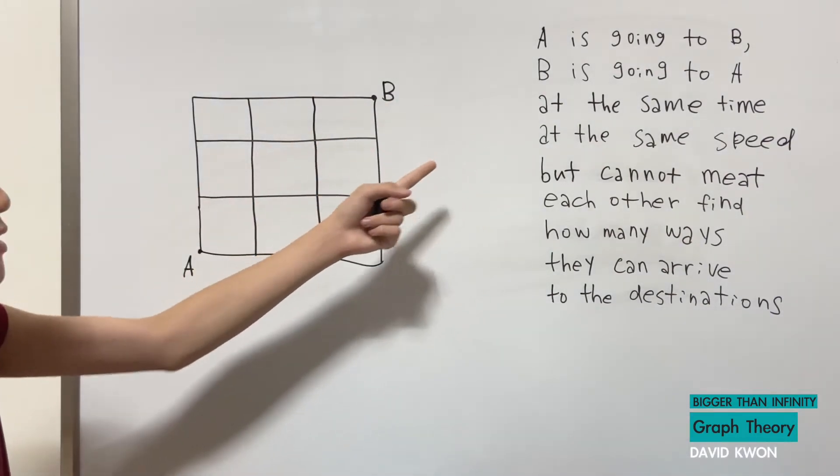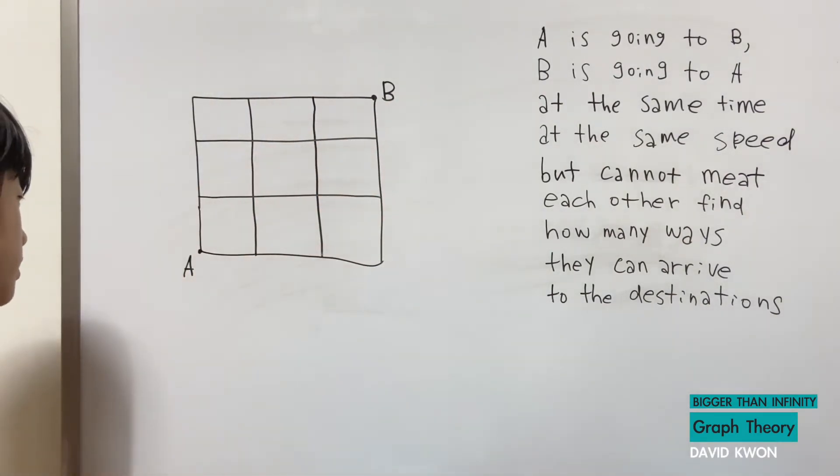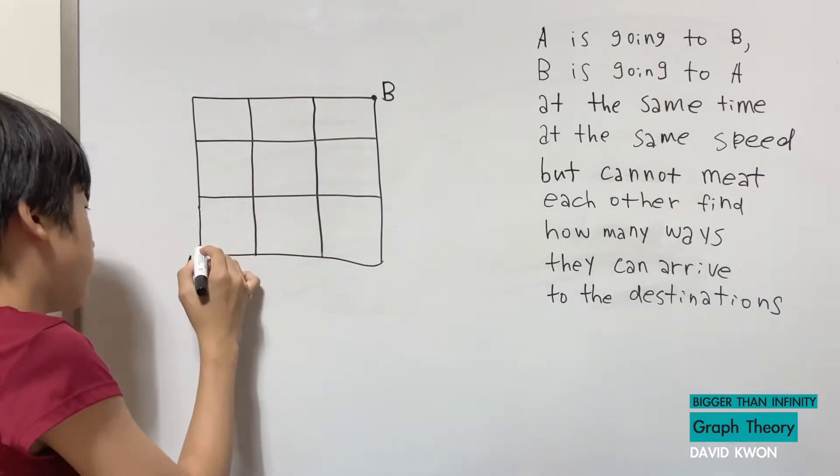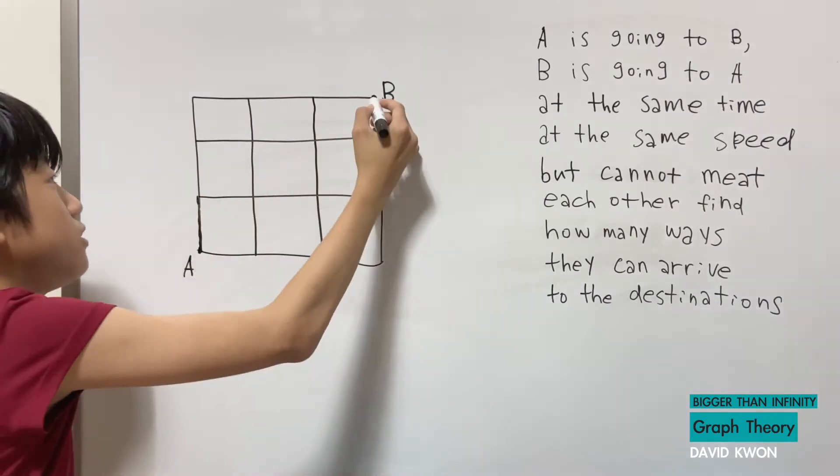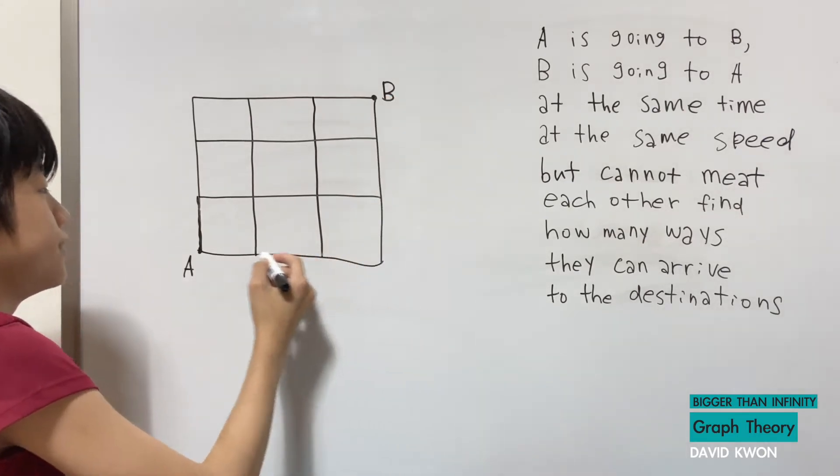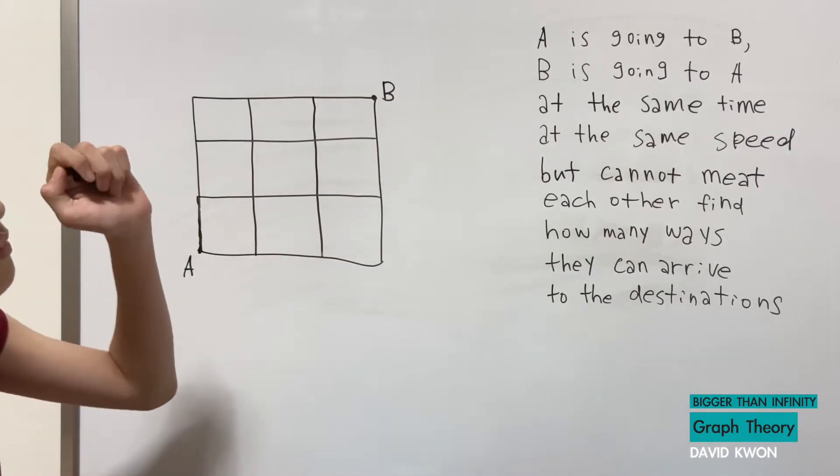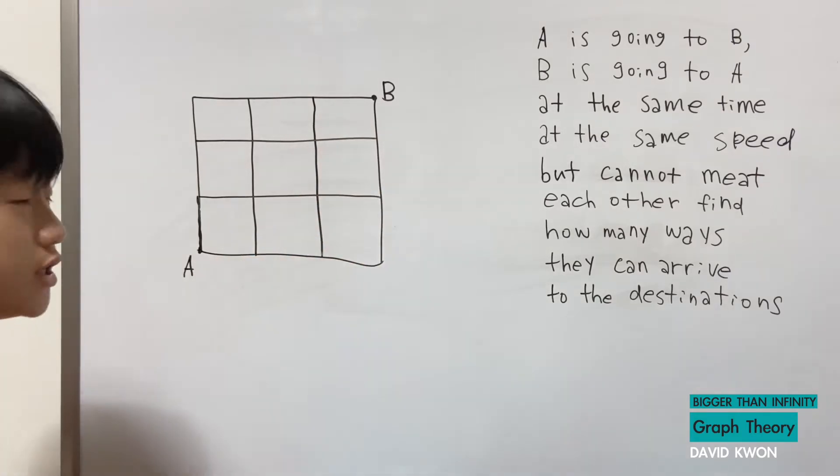When it says at the same time at the same speed that's really important because if A is really slow at running so it goes one line while B goes through all of this, right? And it asks for us but they cannot meet each other.